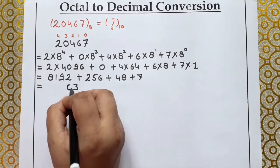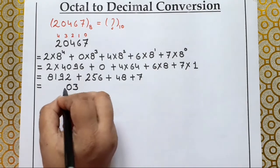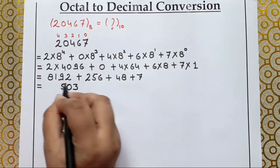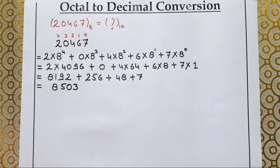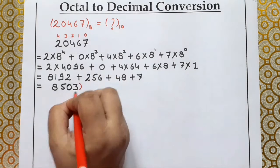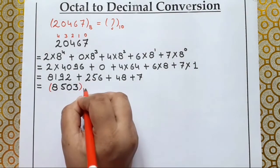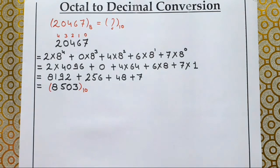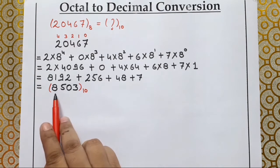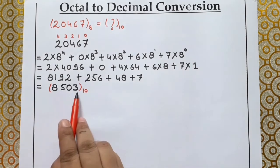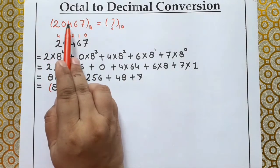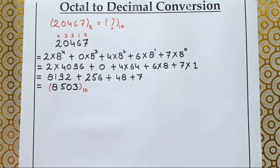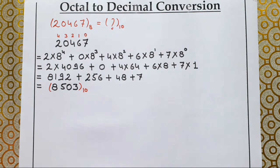Adding all the values: 8192 + 0 + 256 + 48 + 7 = 8503. This is our decimal number. This decimal number 8503 is equivalent to octal number 20467.